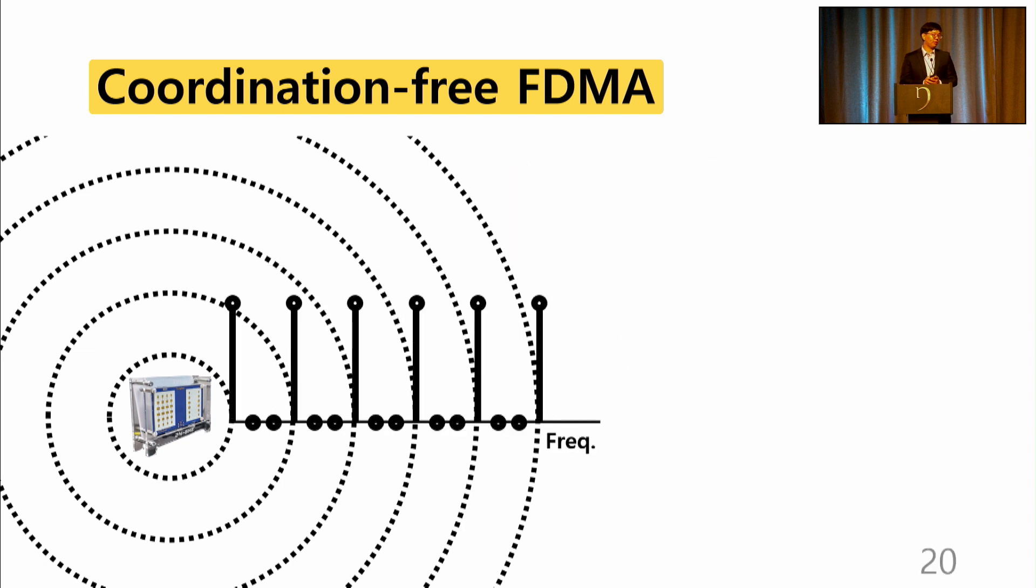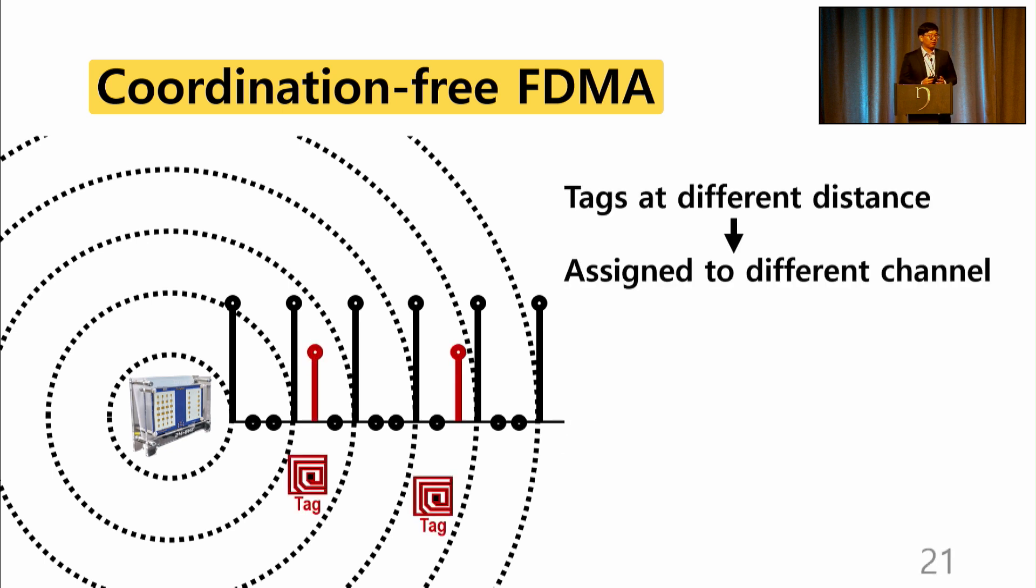In frequency domain, the channels can be represented like this, where you can see the tags at different distances are assigned to different channels.